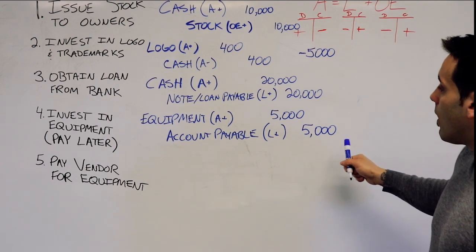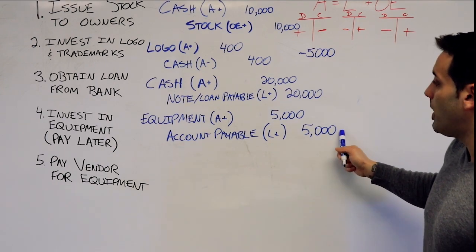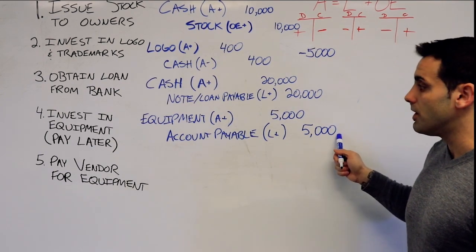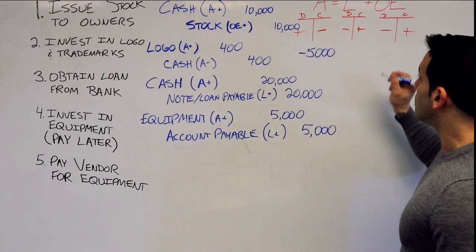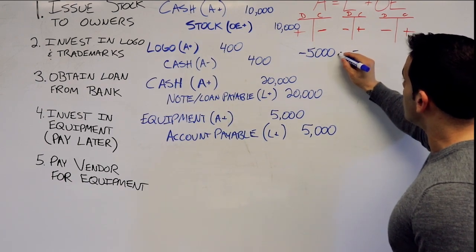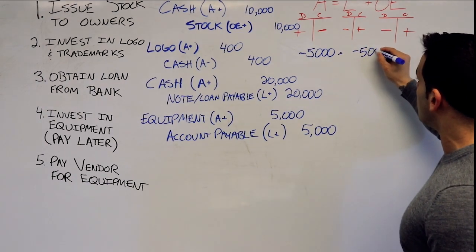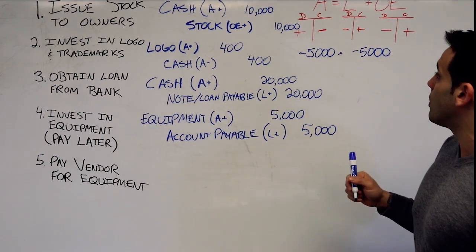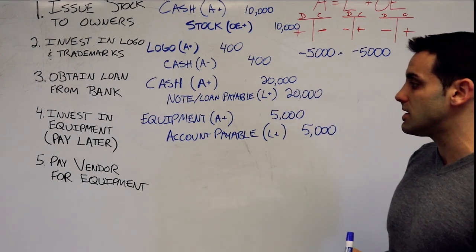And we're also going to pay off or reduce or kill this account payable. So the accounts payable is also going to go down by $5,000. And does that fit the equation? Does it balance? Yes, it does.